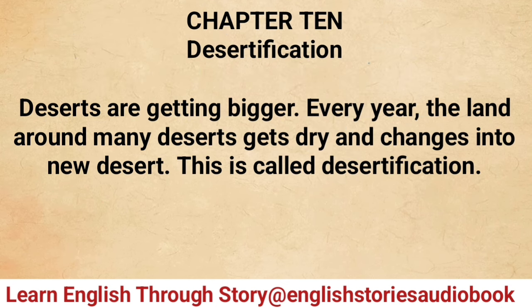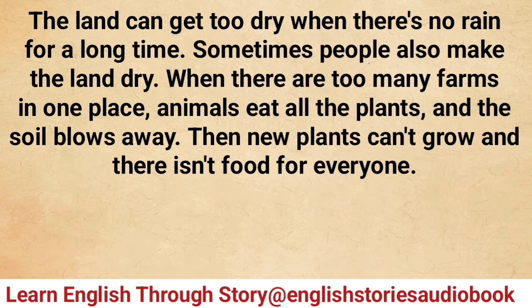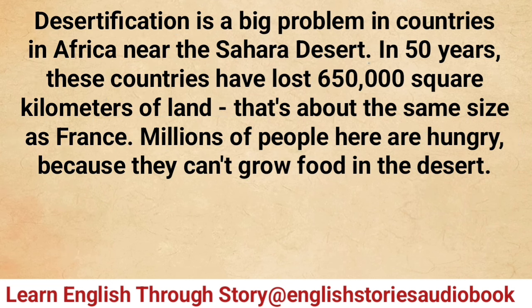Chapter 10: Desertification. Deserts are getting bigger every year. The land around many deserts gets dry and changes into new desert — this is called desertification. The land can get too dry when there's no rain for a long time. Sometimes people also make the land dry when there are too many farms in one place — animals eat all the plants, the soil blows away, new plants can't grow, and there isn't food for everyone.